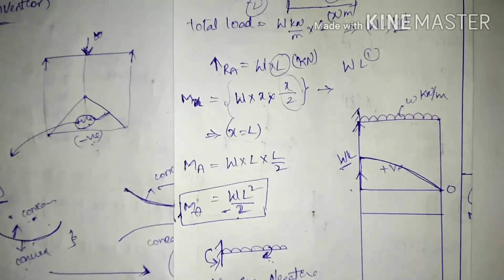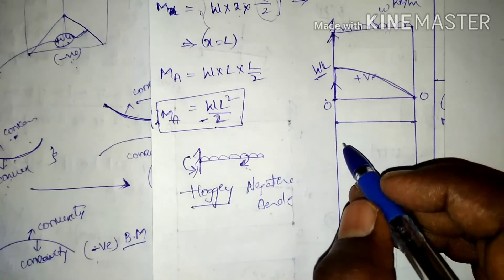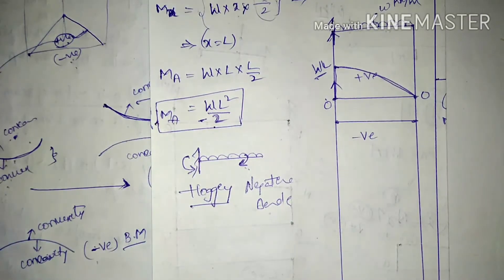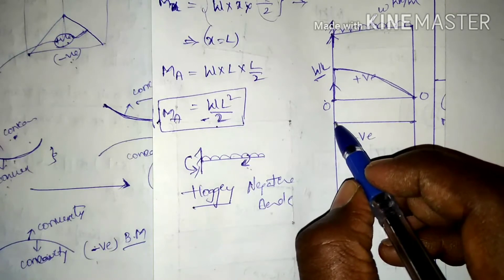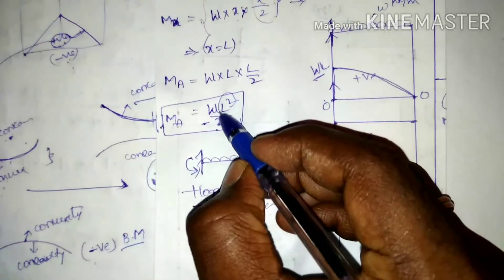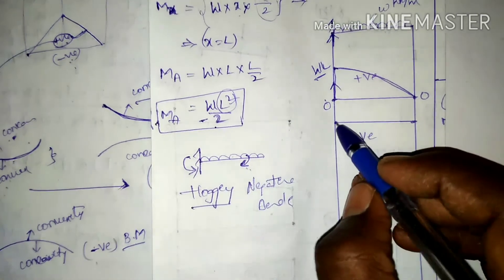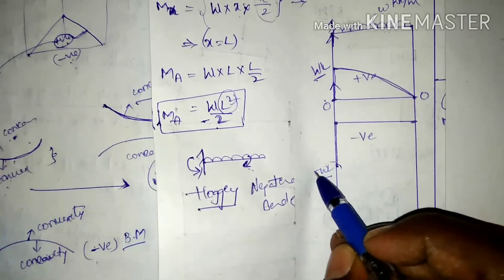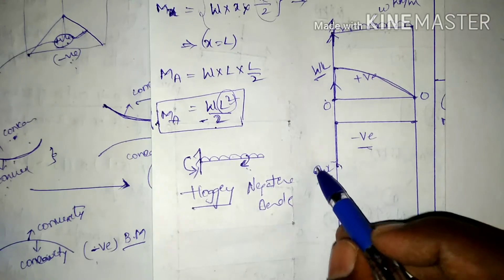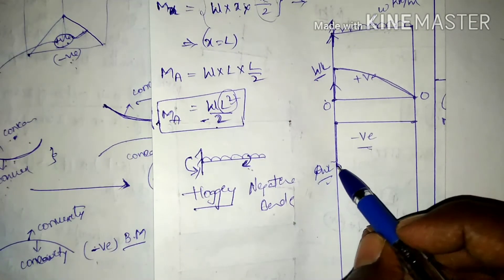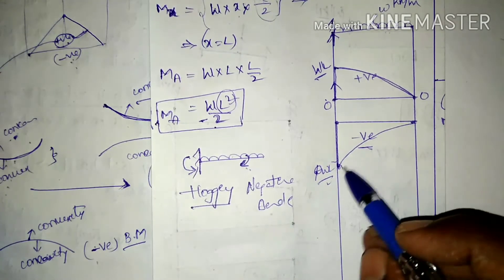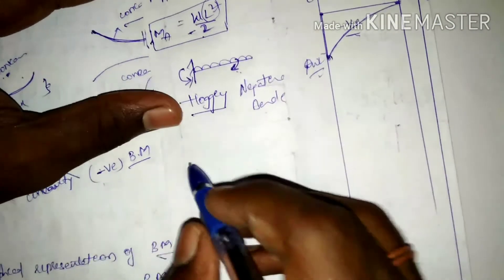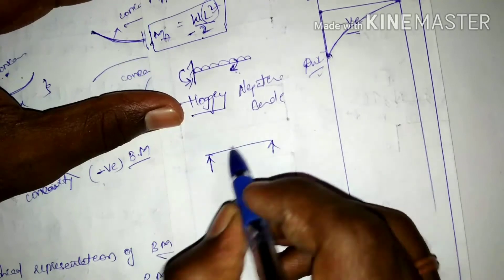For the bending moment diagram, the value is in the negative direction and equals minus WL²/2 at the fixed end. Since the equation has L squared, the BMD is parabolic — it curves from zero at the free end to minus WL²/2 at the fixed end.